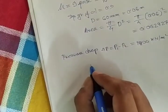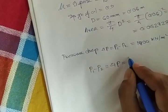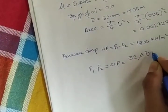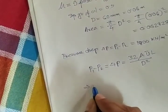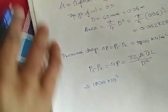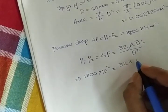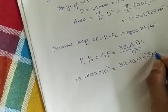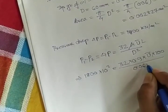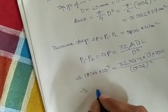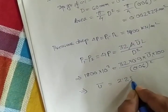If you remember Hagen-Poiseuille equation, p1 minus p2 equals 32 mu average velocity length divided by d square. If you put the values: 1800 into 10 to the power 3 (kilo Newton per meter squared), then 32, mu is 0.9, velocity we don't know, length is 100, d is 0.06 square. If you perform the calculation, you will get u bar equals 2.25 meter per second.